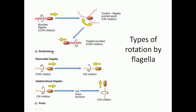Flagella can help a bacteria to move in different orientations via different processes. We will look at two different types of flagella present in a bacterial cell. Peritrichous flagella have more than one flagellum present from different regions, completely surrounding a bacterial cell. On the other hand, polar flagella are only present from one pole of a bacterial cell.